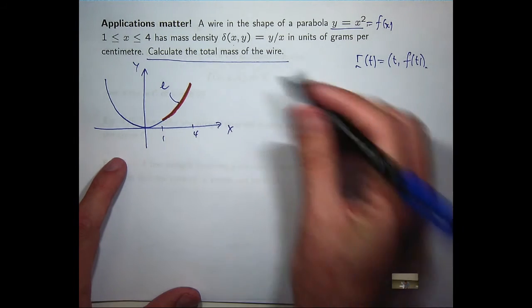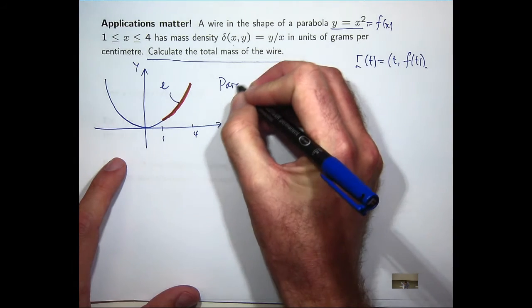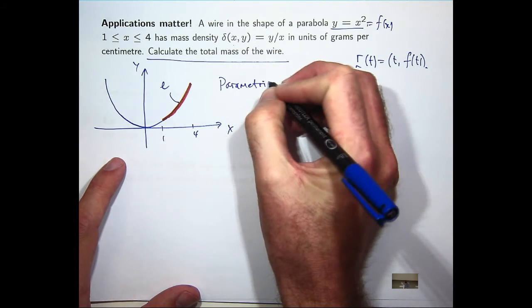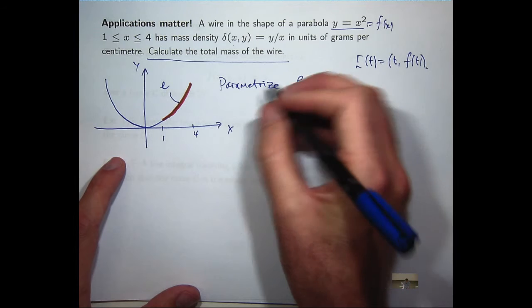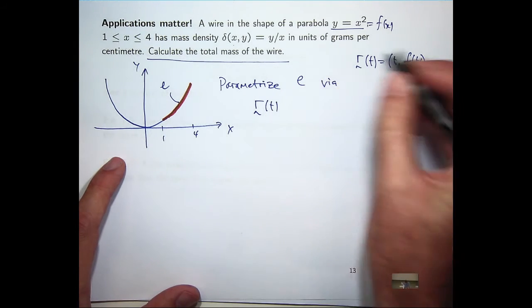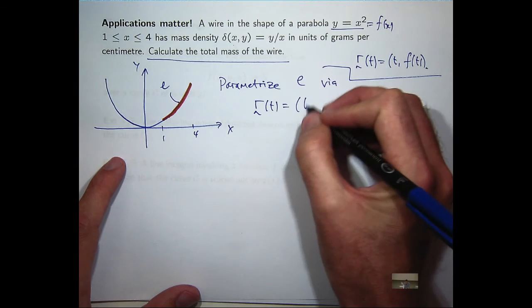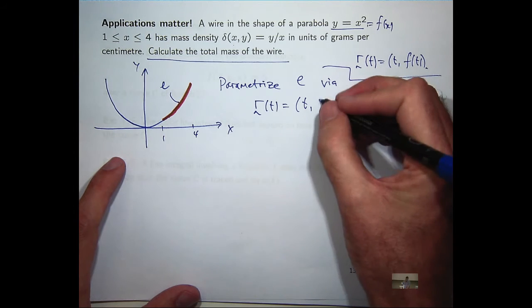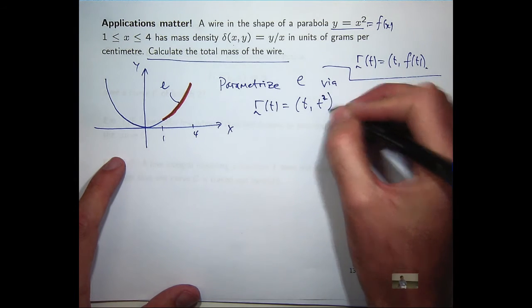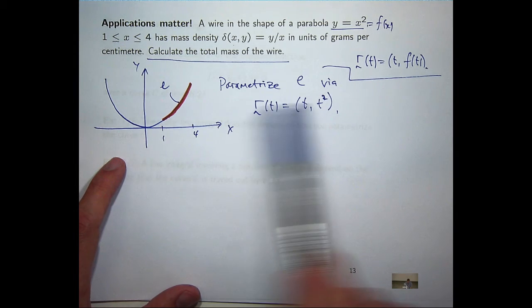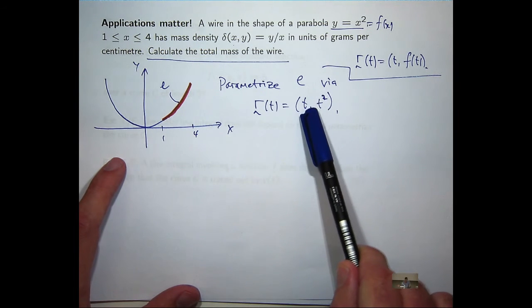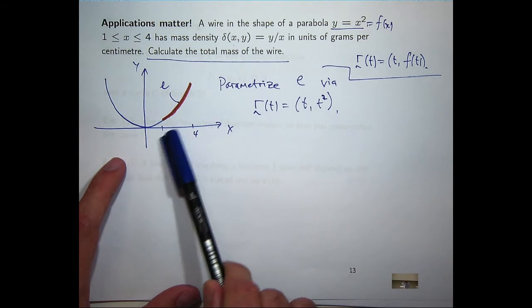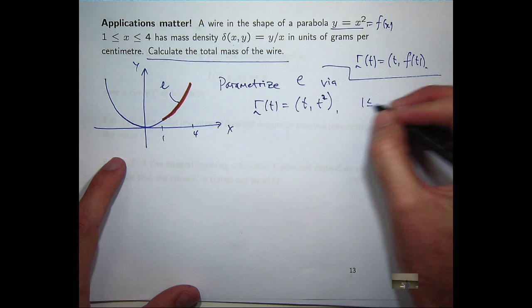So let's parameterize c via t. So instead of f of t, it'd be t squared. Well, it is t squared. And again, t is driving here really. You could think of t as x if you wanted to. t is going to be between 1 and 4.